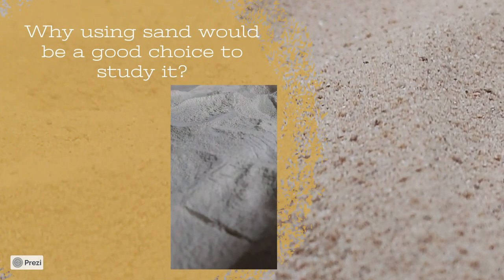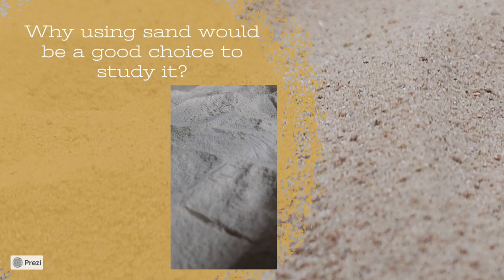The granular material chosen to be studied for capillary rise was sand because of some things. Sand is a common and easy to find material, is the same material used in the initial observation of the group, and is available in different sizes.